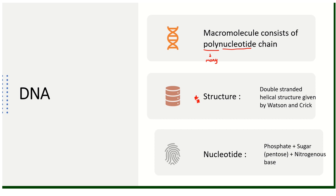Now let's look at nucleotide composition. A nucleotide is made up of three components: a phosphate molecule, a sugar — which is specifically a pentose sugar — and nitrogenous bases. It is called a pentose sugar because the sugar has only five carbon atoms. The DNA is made up of the sugar called deoxyribose, which is the pentose sugar. That is why DNA is called deoxyribonucleic acid.